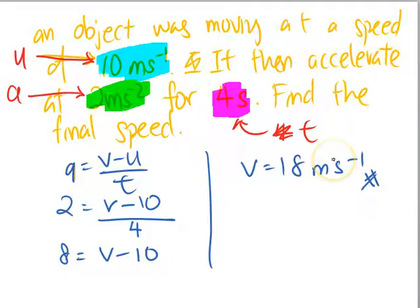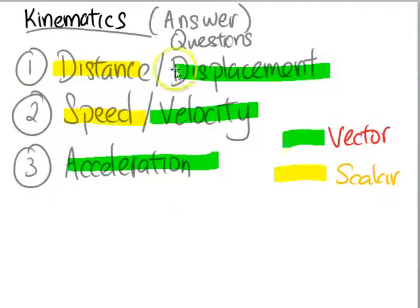So this is how you can go about answering speed using formula. We talked about displacement, acceleration, we talked about all the three things here. Displacement, distance, speed, velocity, and acceleration. These are normally the ways how you go about tackling questions with regards to kinematics. So this marks the end of the answering techniques. Thank you.